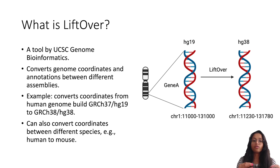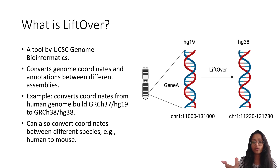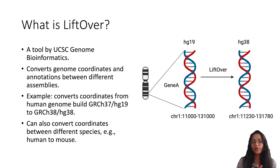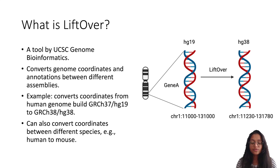LiftOver uses alignment data between different genome assemblies to map coordinates from one assembly to another. For example, you might want to convert coordinates from hg19 or GRCh37 to GRCh38 or hg38. These are different human genome builds. If you're not familiar with these builds or the differences between them, I've previously created a video explaining that, and I'll be adding the link in the description section below.